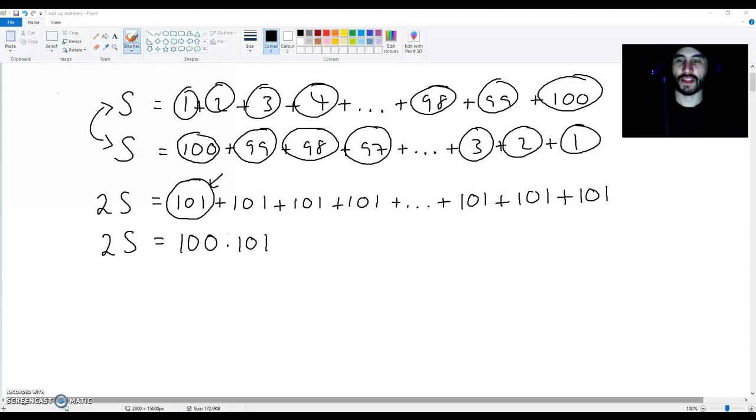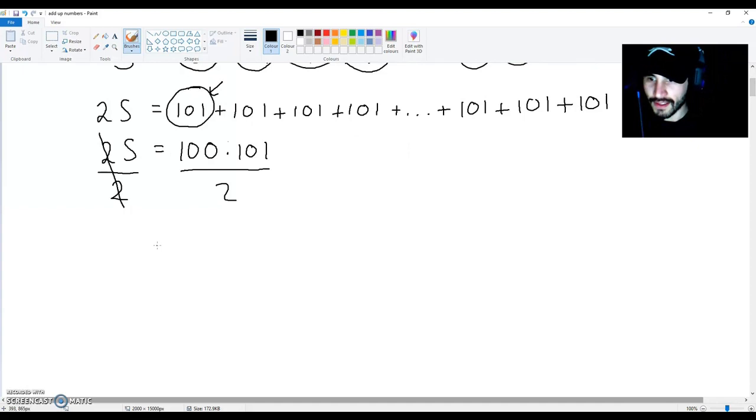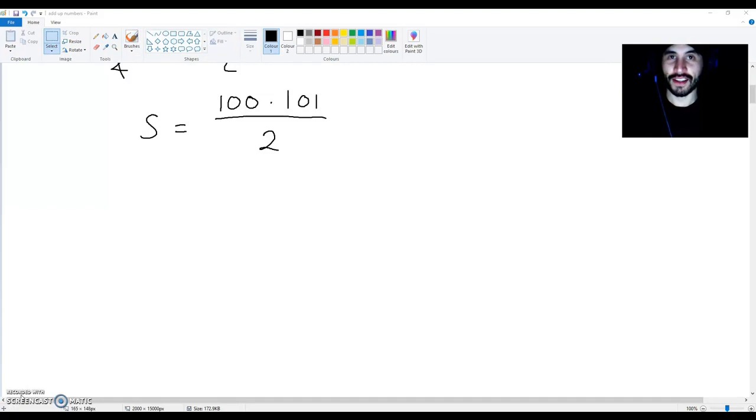We are going to divide both sides of this equation by 2. So, this means we end up with S is equal to 100 times 101 divided by 2. So, we know that the sum of every number from 1 to 100 is going to be equal to 100 times 101 divided by 2. However, what is this value simplified? We are going to find out.